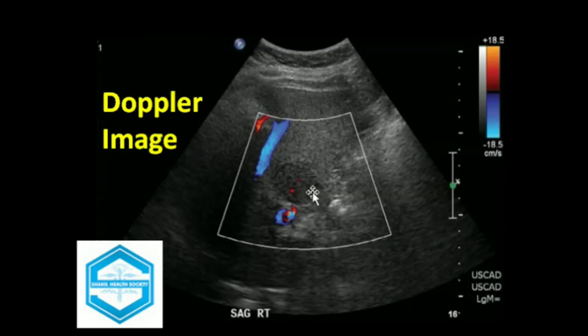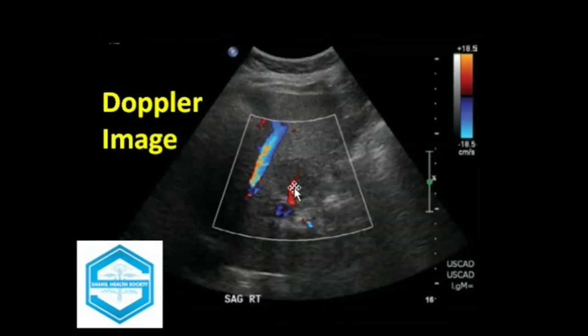It was concluded to label this mass as focal nodular hyperplasia, as it shows flow in its center and other findings related to hepatitis C are not present. Further work with CT scan and MRI are required to confirm the diagnosis.